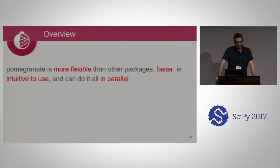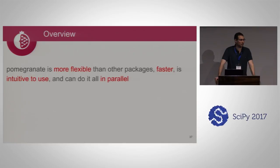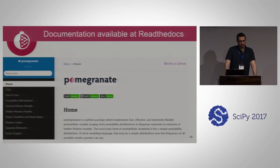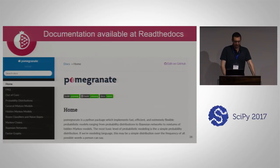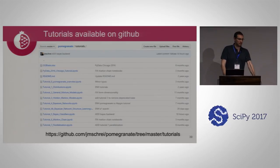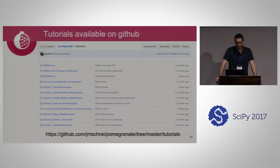To go back to the opening slide: Pomegranate is more flexible than other packages, it's faster, I hope you found it intuitive to use, and it can do everything in parallel using the additive sufficient statistics derived at the beginning. There is documentation available and an API reference on the Read the Docs site. Tutorials for all models are available in the tutorials folder on the Pomegranate GitHub.